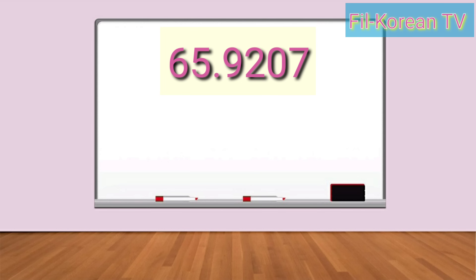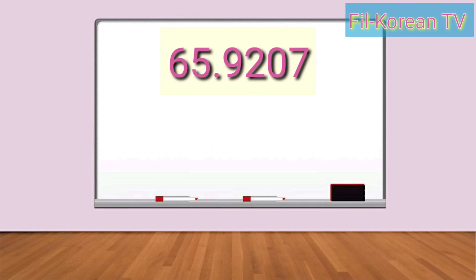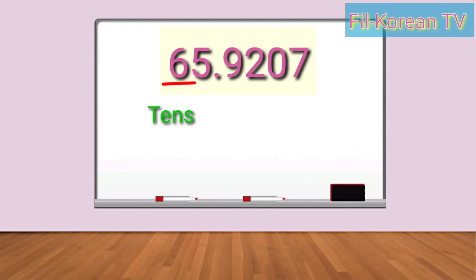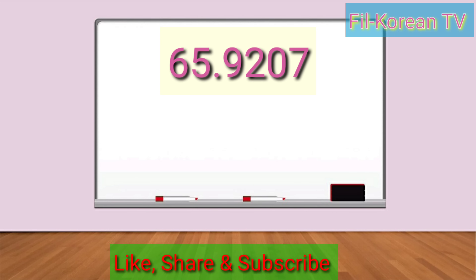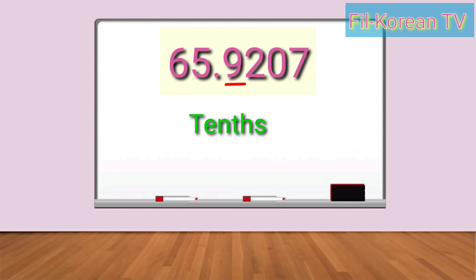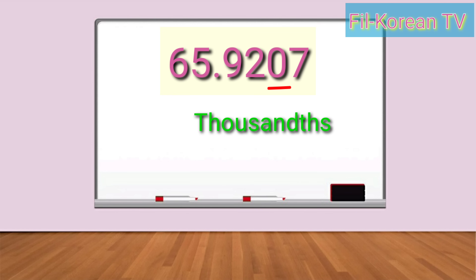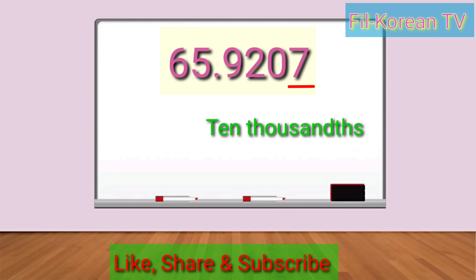Okay, let's give the place value of each digit in the number sixty-five and nine-thousand-two-hundred-seven ten-thousandths. The place value of five is ones, and the place value of six is tens. Sixty-five is the whole number. Now let's give the place value of the decimal numbers. The place value of nine is tenths. The second digit to the right is two, and its place value is hundredths. The place value of zero is thousandths. And the last digit, seven, has a place value of ten-thousandths.